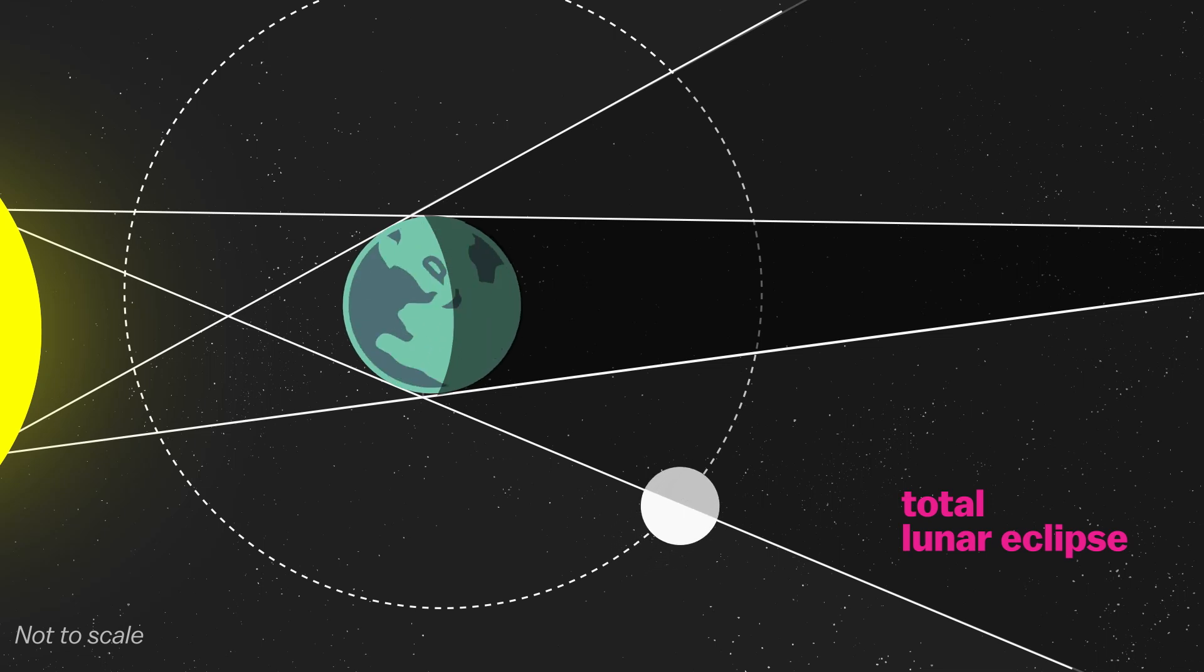You're much more likely to see a total lunar eclipse in your lifetime. They can last an hour and 40 minutes and they're viewable for anyone on the night side of Earth.